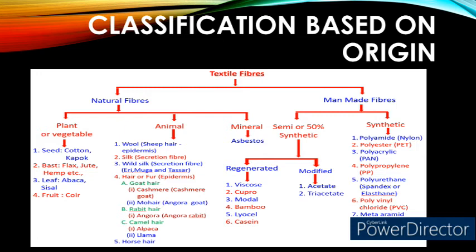The examples for synthetic man-made fibers are polyamide — also known as nylon — polyester, polyacrylic, polypropylene, polyurethane, polyvinyl chloride, meta-aramid, and para-aramid textile fibers.